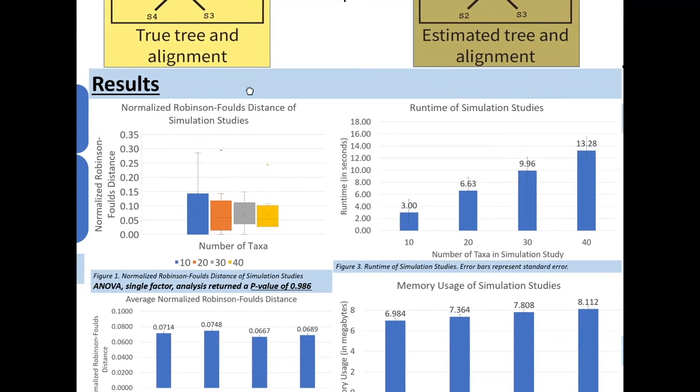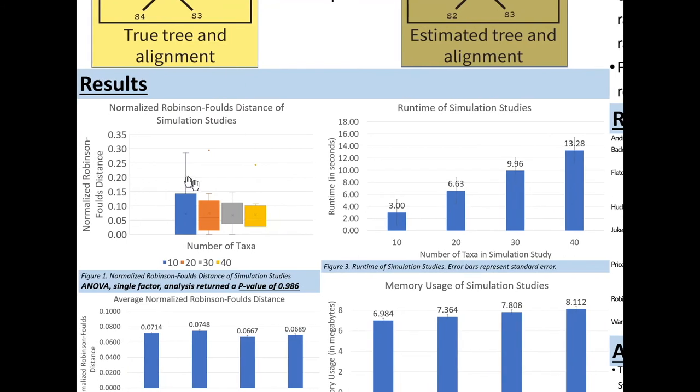The results of my study are seen here. In this first graph, the x-axis shows the four studies that I did with the four corresponding colors, and the y-axis shows the normalized Robinson-Foulds distance which shows the type of error between all of them. As you can see in this figure below, the averages are very close together.